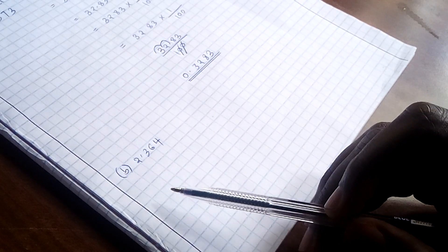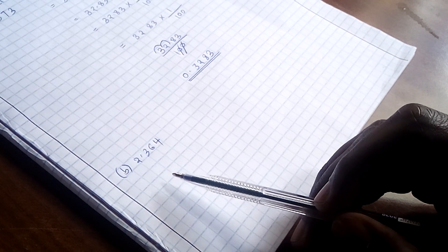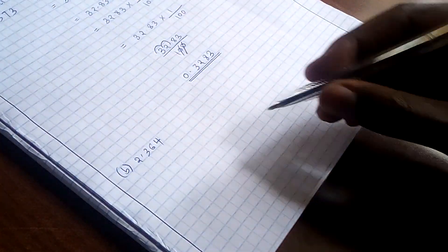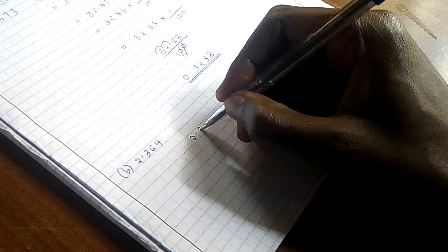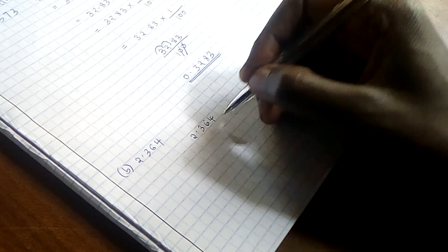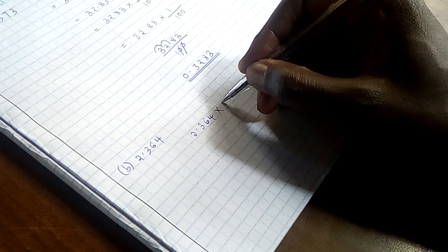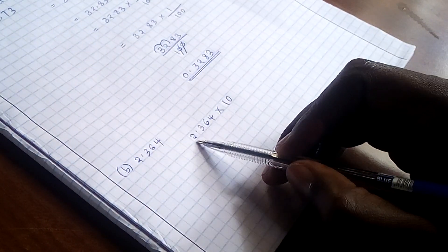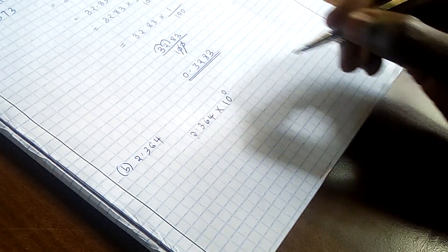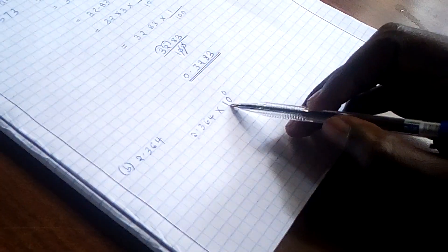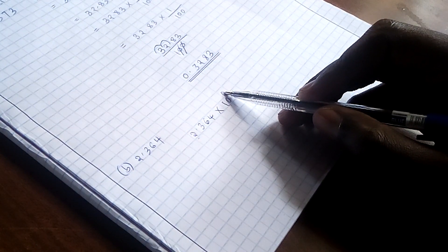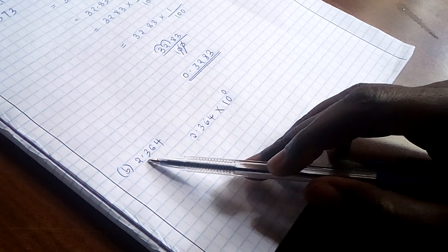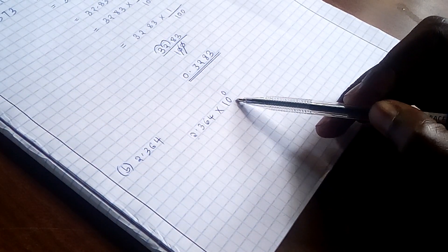Yes, it has been written in its standard form and therefore we can express it as 2.364 times 10 to the power of 0, because already this number is in standard form. 10 raised to the power 0 is just 1, it is the same as 1. So we are going to multiply this number by 1, and that mathematically means we have not changed the number.